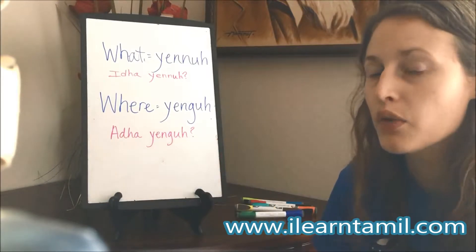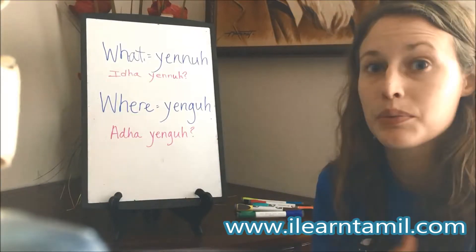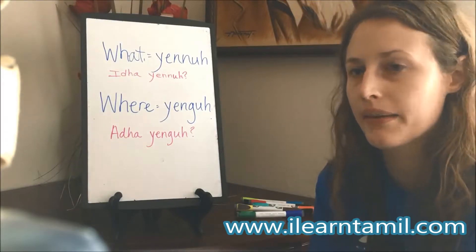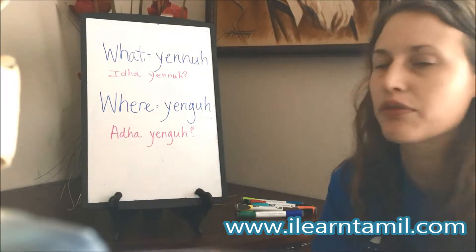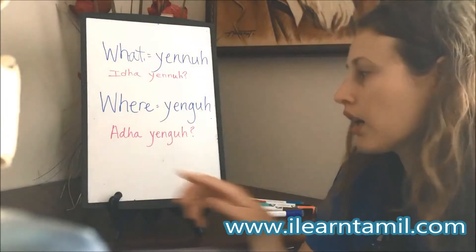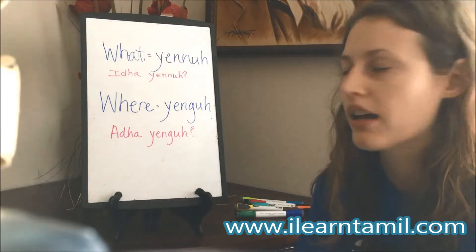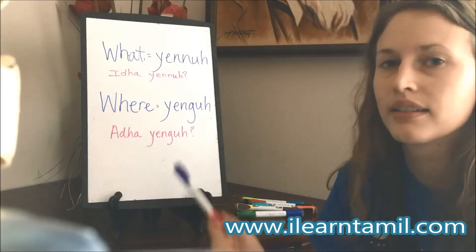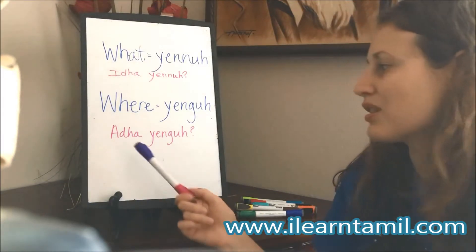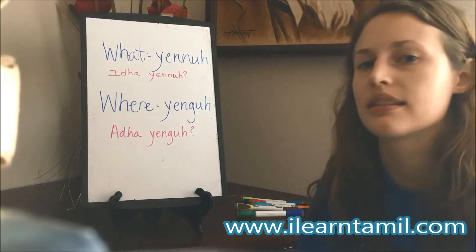For the word 'where,' we use the word 'yenga.' Again, some people say the 'y,' some people don't — so it can be 'enga' or 'yenga.' If we are talking about a party or a restaurant or something that's not right here, and I say 'a yenga,' that means 'where is that?' And 'ire yenga' means 'where is this.'